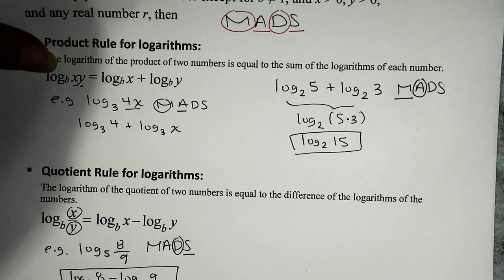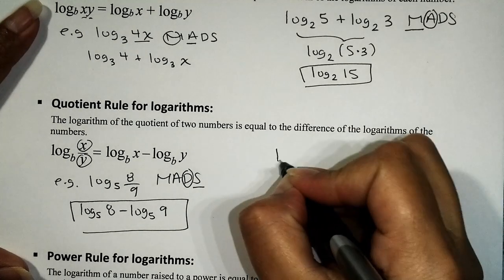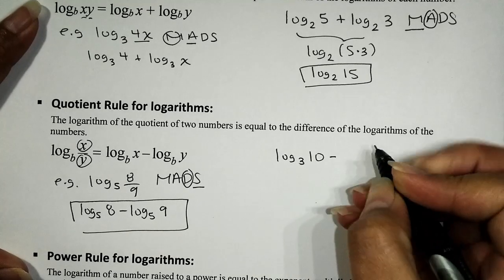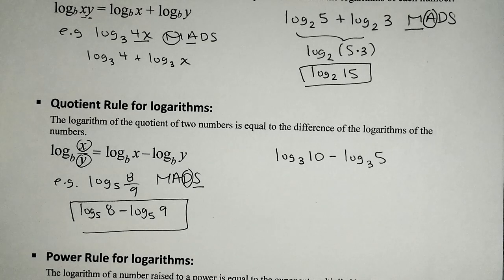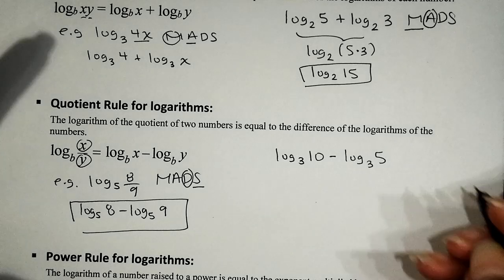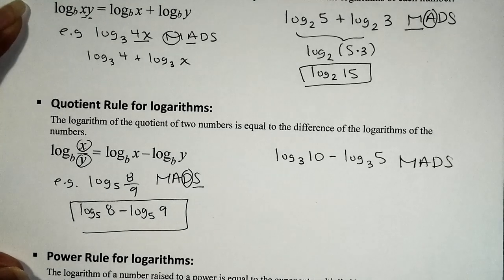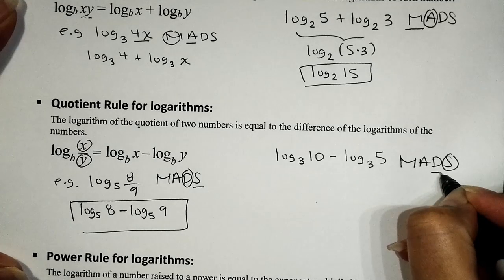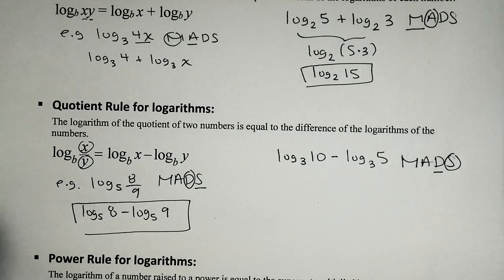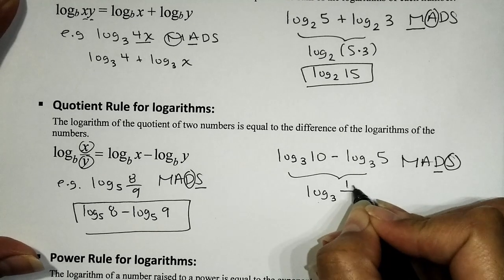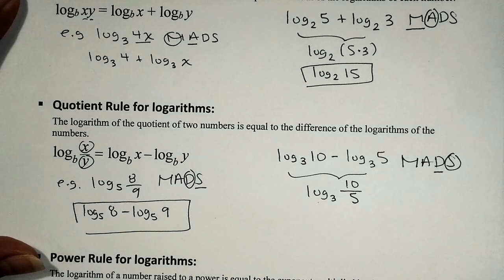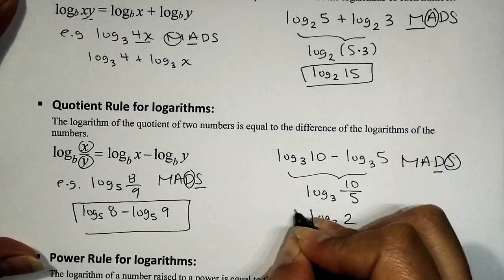Next bonus problem: logarithm base 3 of 10 minus logarithm base 3 of 5 — write it as a single logarithm. We have a subtraction problem. If we're subtracting two logarithms, we backtrack to a single log by dividing the arguments. The quotient of 10 and 5 is 2, so we get logarithm base 3 of 2.